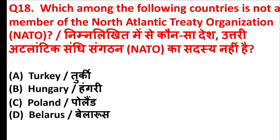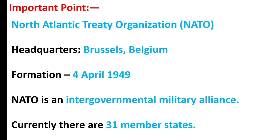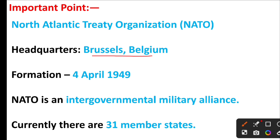Which among the following countries is not a member of the North Atlantic Treaty Organization? The right answer is option D: Belarus. Friends, North Atlantic Treaty Organization, i.e., NATO. Headquarters are Brussels, Belgium. Formation is 4 April 1949. NATO is an intergovernmental military alliance. Currently, there are 31 member states.